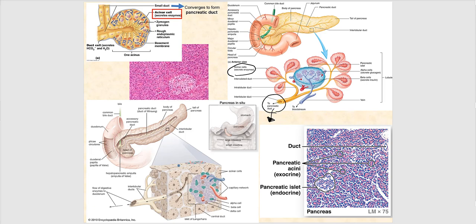The endocrine part of the pancreas involves the pancreatic islets: alpha cells of pancreatic islets produce glucagon, and beta cells of pancreatic islets produce insulin. Glucagon and insulin end up in blood.